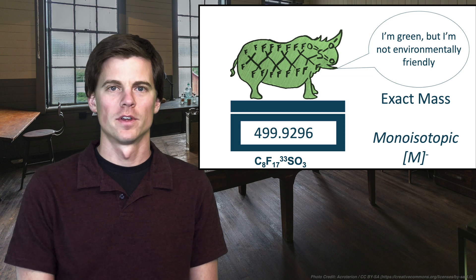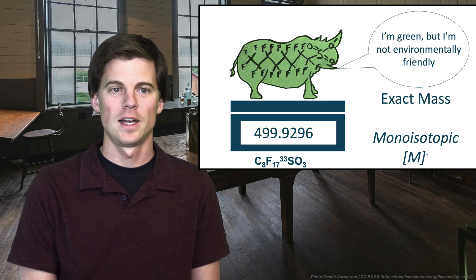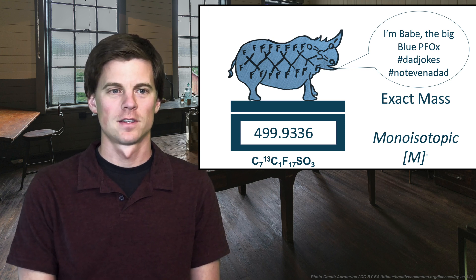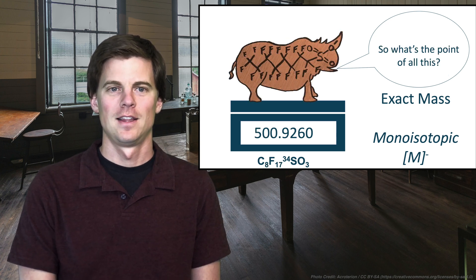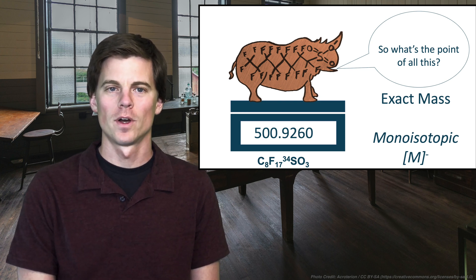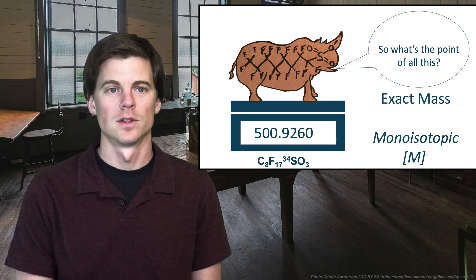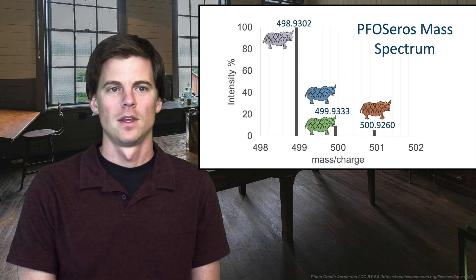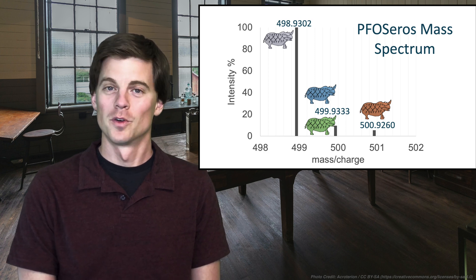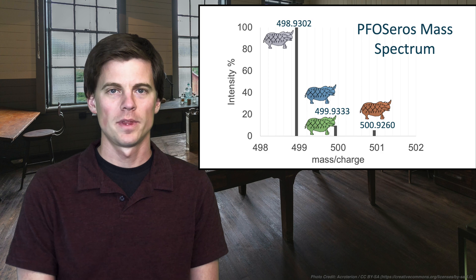So when we look at the masses, the S33 PFOS, this is the green PFOS, this one came out at 499.9296. The blue PFOS, which I called the big blue PFOS, 499.9336. And then the plus two at 500.9260. And at this point it's bored kind of like you are saying, what's the point of all this showing us the different forms. The point of all this is to show you in a mass spectrometer, what does PFOS look like? And this is what it looks like. None of our mass spectrometer software that I know of actually has rhinoceroses in it.